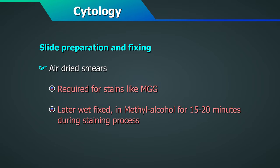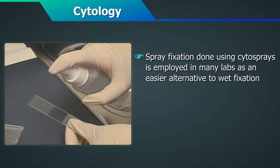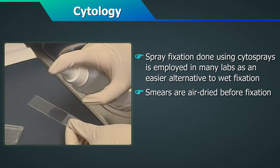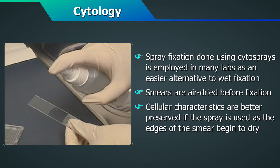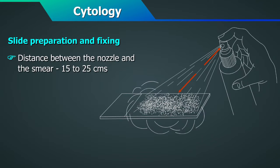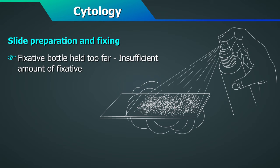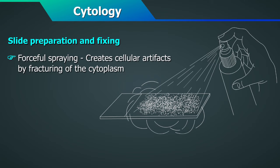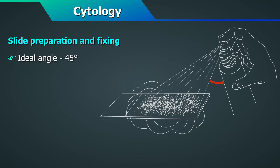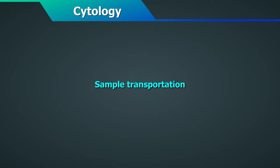Air-dried smears are later wet-fixed in methyl alcohol for 15–20 minutes during the staining process. Spray fixation using cytosprays is employed in many labs as an easier alternative to wet fixation. The cellular characteristics are better preserved if the spray is used as the edges of the smear begin to dry. The distance between the nozzle and the smear should be about 15–25 cm. If the fixative bottle is held too close, cells can be dislodged; if too far, insufficient fixative reaches the smear. Too forceful spraying can also create cellular artifacts by fracturing of the cytoplasm. An ideal angle for spraying is 45 degrees.